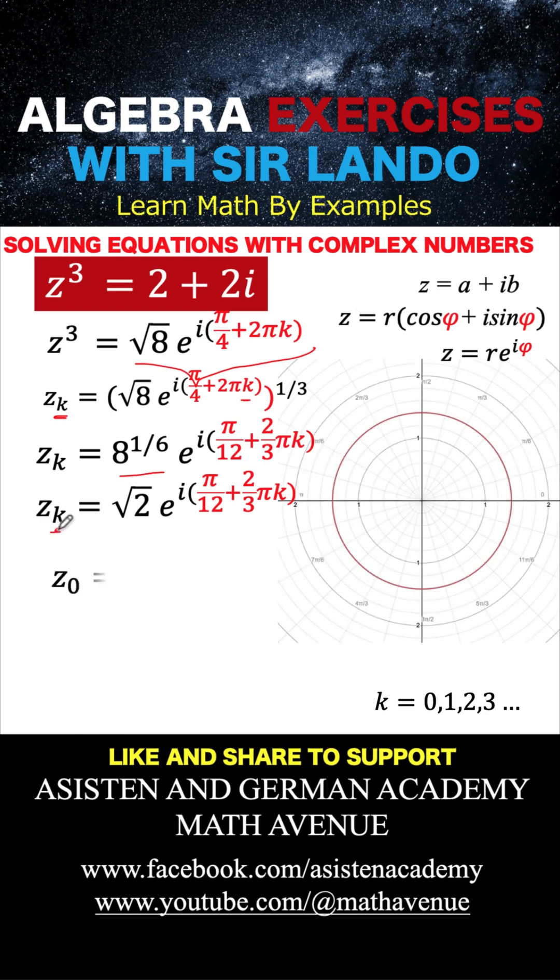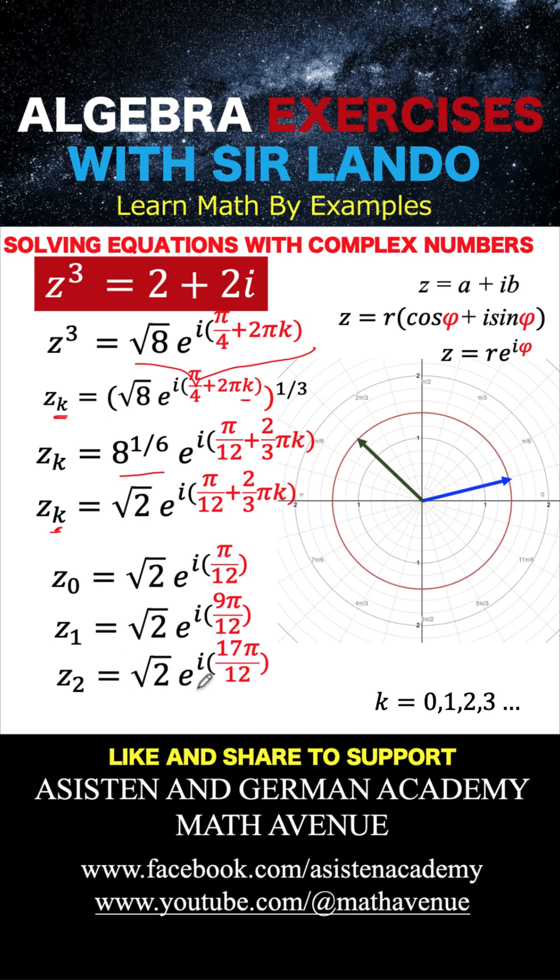So if k equals 0, then we have this solution: square root of 2 e raised to i times pi over 12, and this pi over 12 is around 15 degrees. If k is 1, we have square root of 2 e raised to i times 9 pi over 12, and that is about 135 degrees. And for k equals 2, that is square root of 2 e raised to i times 17 pi over 12, and that is about 255 degrees.